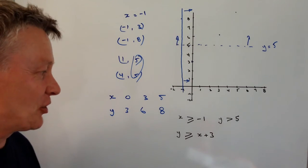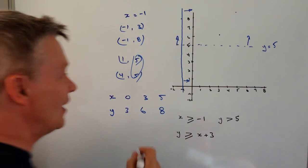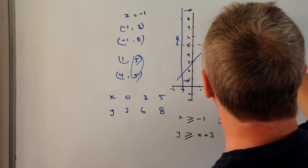OK, so I'm just going to join those together. I'm going to use a solid line again because it's equal to. So if I draw that, it's going to be something like that.